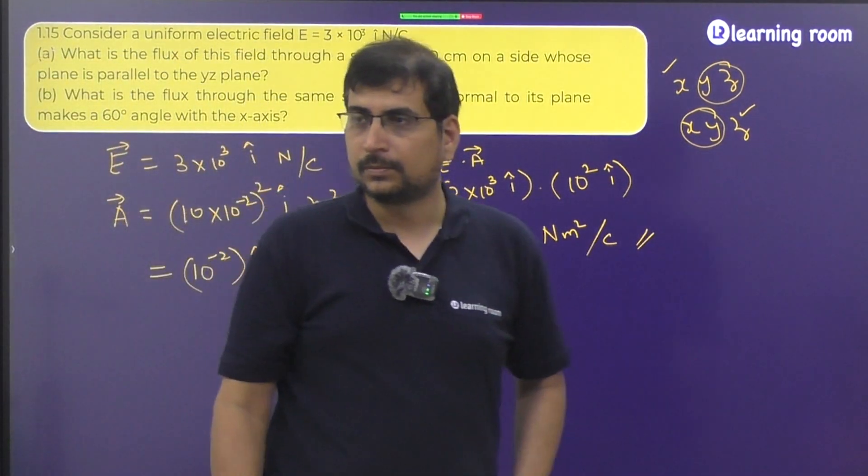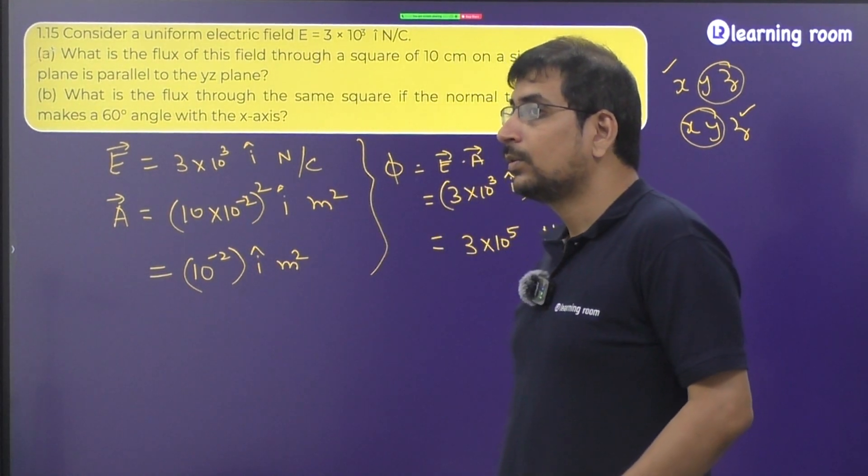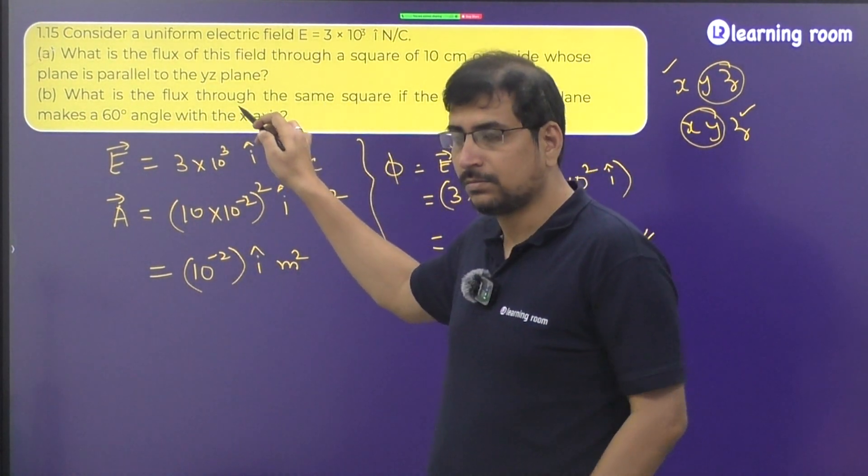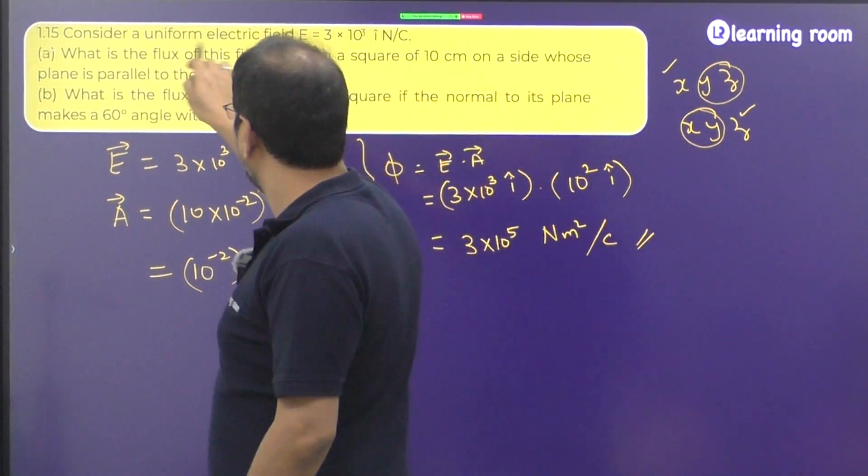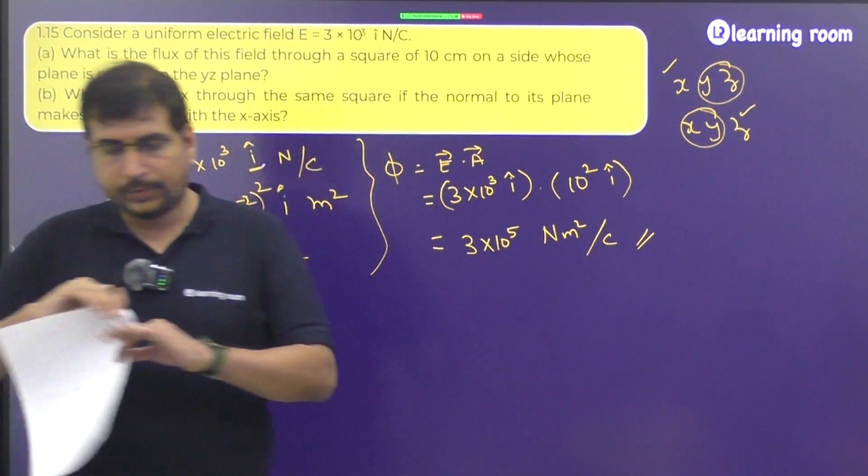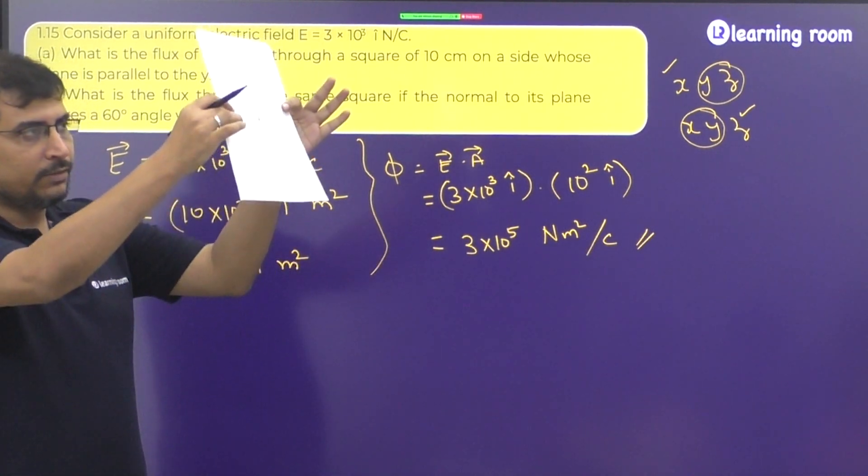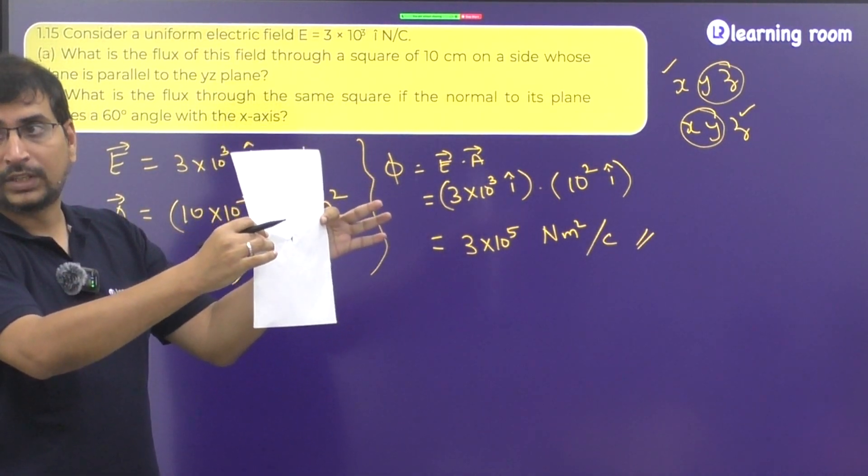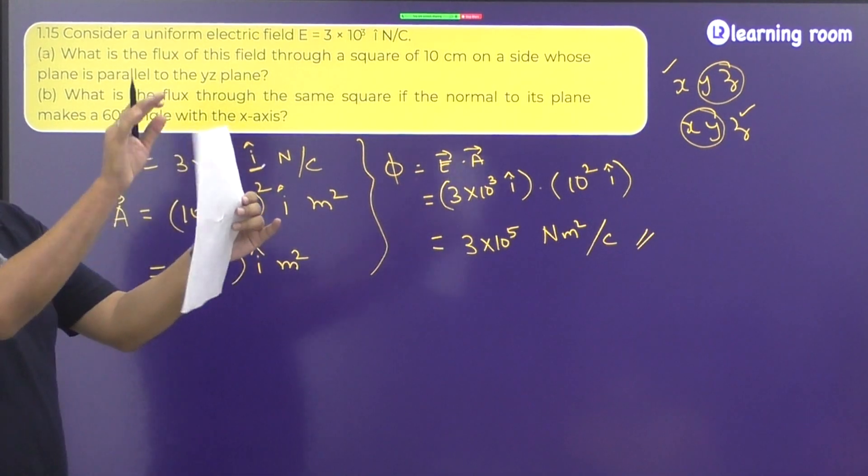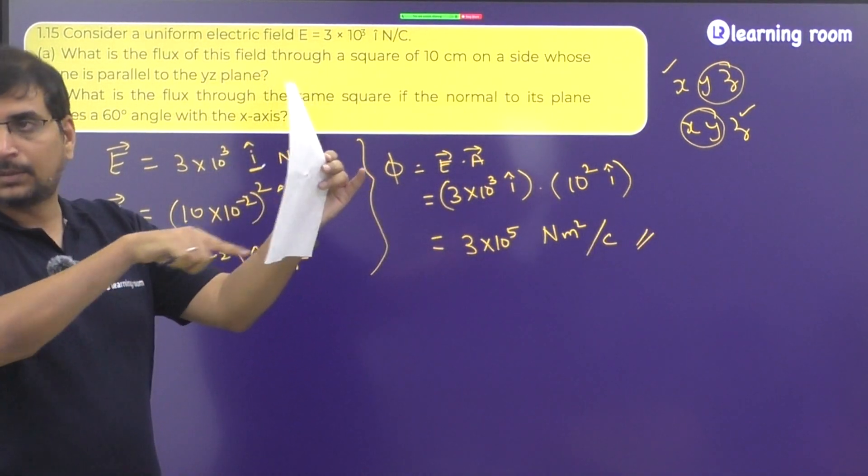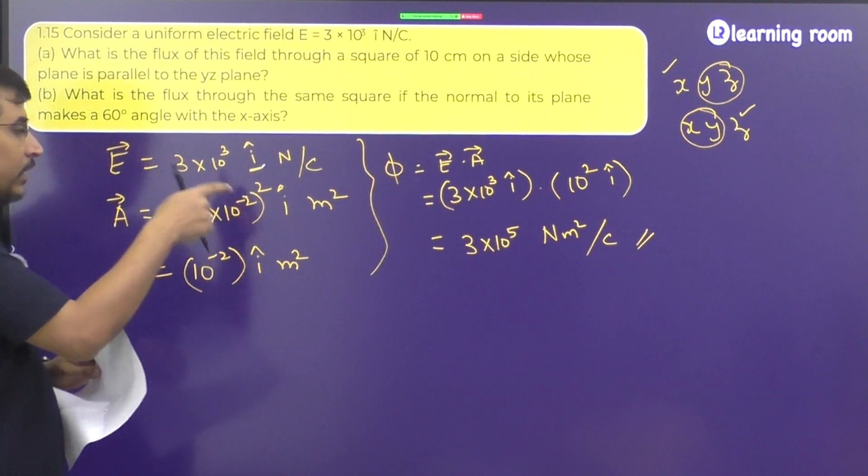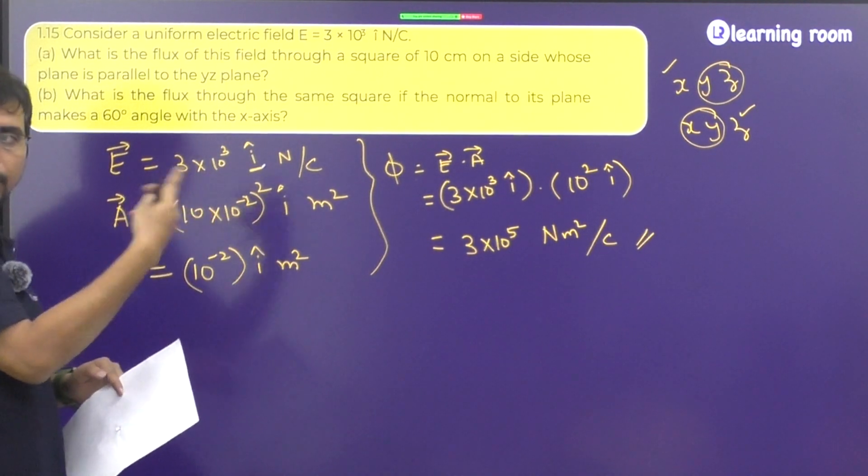Is that clear? I do not know what is the doubt. Which part did you not understand? Are you able to visualize the question? See, there is a uniform electric field in the X direction. Let's say there is a field going like this. In that field, they have placed a square like this. And how is that square? The plane of the square is parallel to YZ plane. So how is its area vector? That is why area vector I took the magnitude. Why did I take this magnitude? Because it is a square for this.